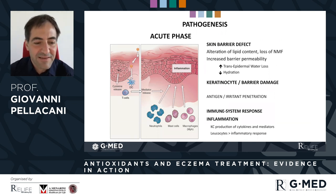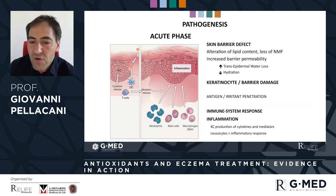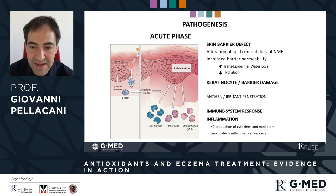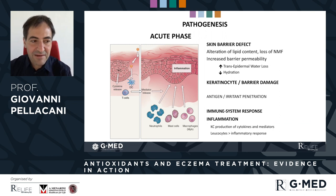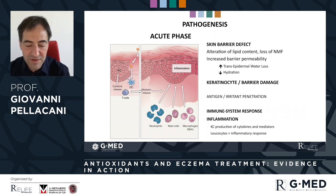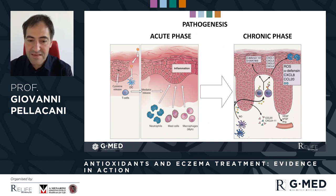It is very important to understand how the mechanisms of inflammation and the pathological process advance and give rise to clinical manifestations. One of the first actors in this mechanism is the skin barrier defect. We usually have an alteration of the barrier with increased permeability, and the keratinocyte barrier damage enables antigens, irritants, and other substances to penetrate into the skin, generating an immune response and consequent inflammation.